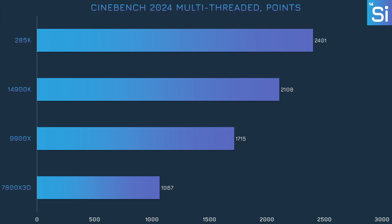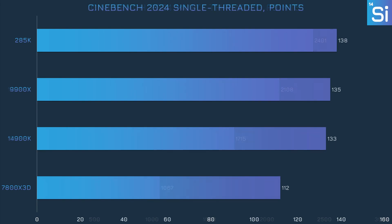We're starting with our non-gaming benchmarks, and first up is Cinebench 2024, the quintessential CPU rendering test. The 285K shows a decent 14% improvement over the 14900K. It's also significantly ahead of the 9900X and the 7800X3D, although those CPUs are cheaper and don't have as many cores. The single-threaded numbers show the 285K only makes small gains in single-threaded work, just 4% faster than the 14900K. The impressive multi-threaded performance is certainly not because the P-cores are individually better than before, at least when it comes to rendering.